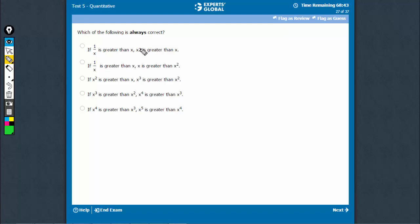Which of the following is always correct? This has to be x square. I'm sorry, we'll have this corrected. This is x square.